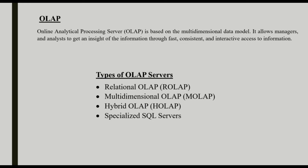OLAP is called Online Analytical Processing. It is based on the multidimensional data model. It allows managers and analysts to get an insight of the information through fast, consistent, and interactive access. The types of OLAP servers are: Relational OLAP (ROLAP), Multidimensional OLAP (MOLAP), Hybrid OLAP (HOLAP), and Specialized SQL Servers — there are 4 types.